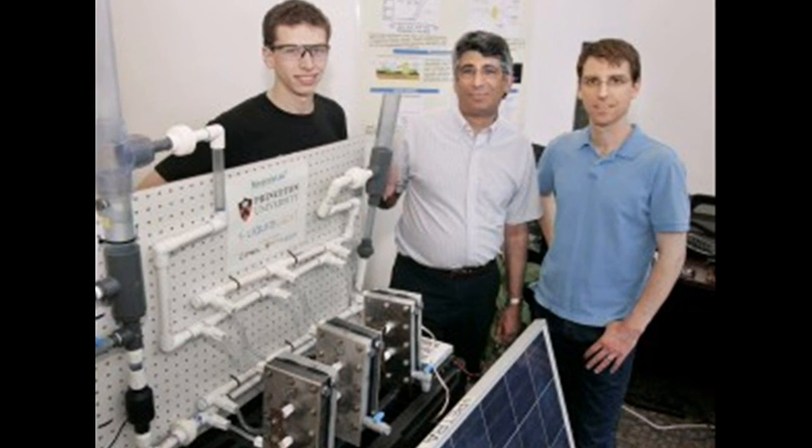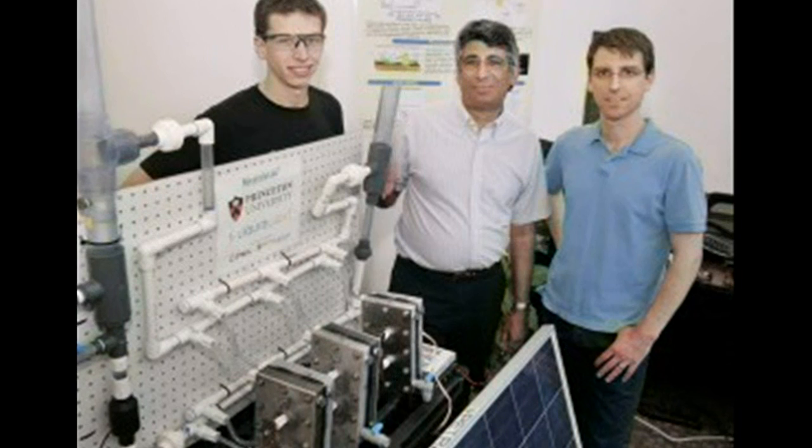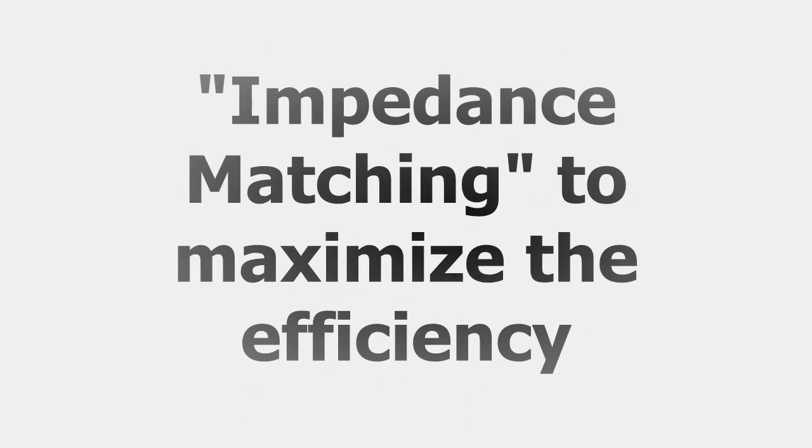To maximize the efficiency of the system, the amount of power produced by the solar panel must match the amount of power the electrochemical cell can handle. This optimization process is called impedance matching.